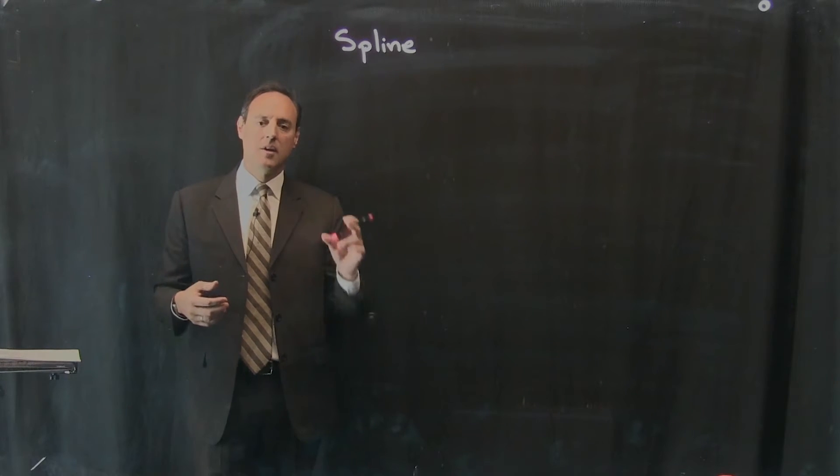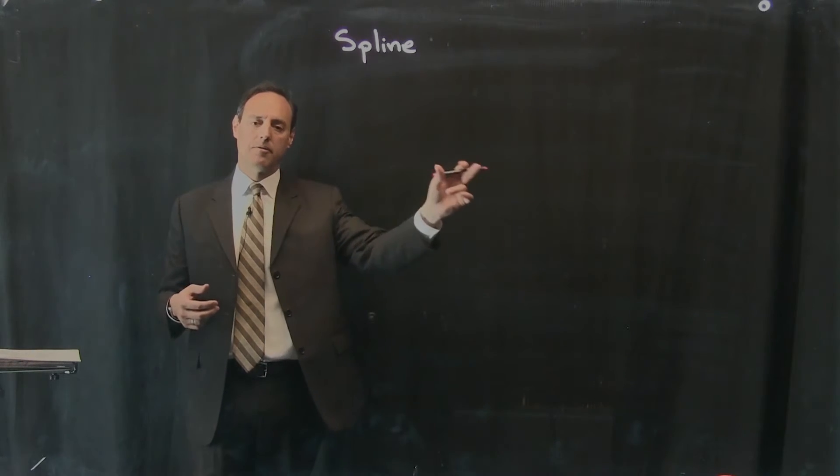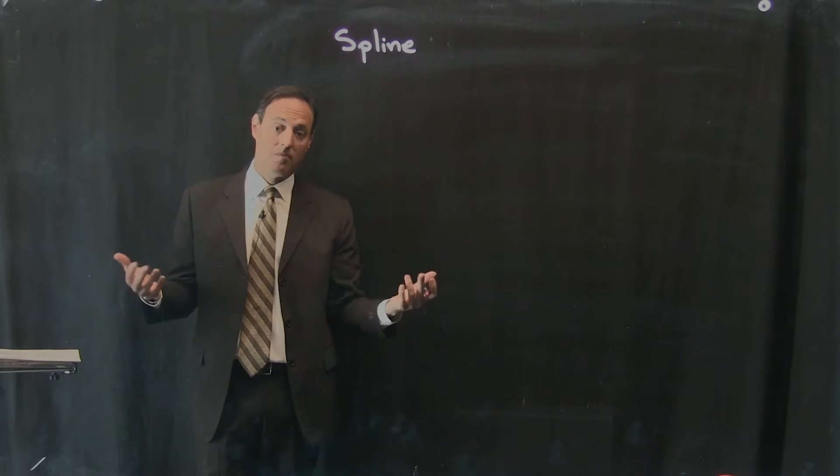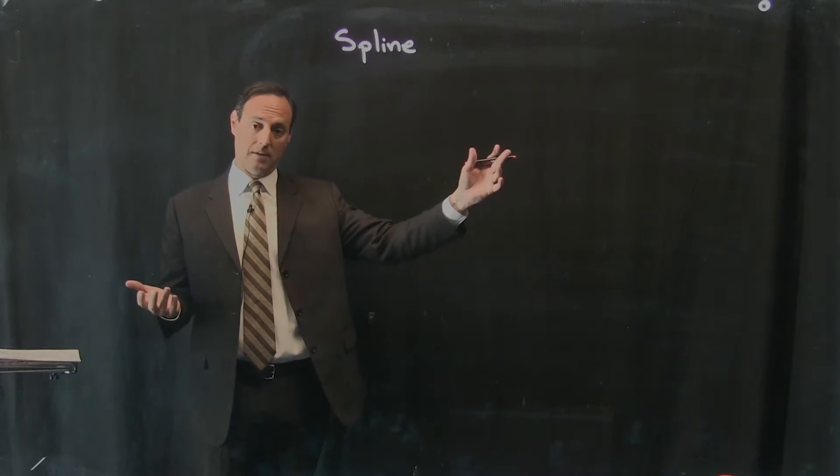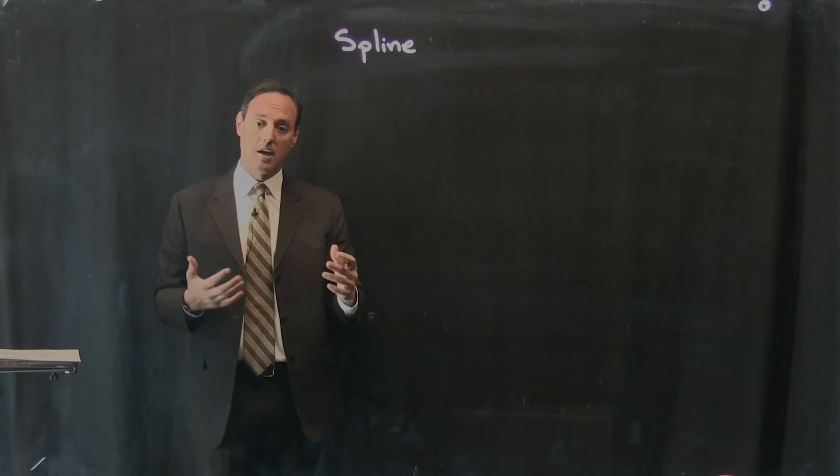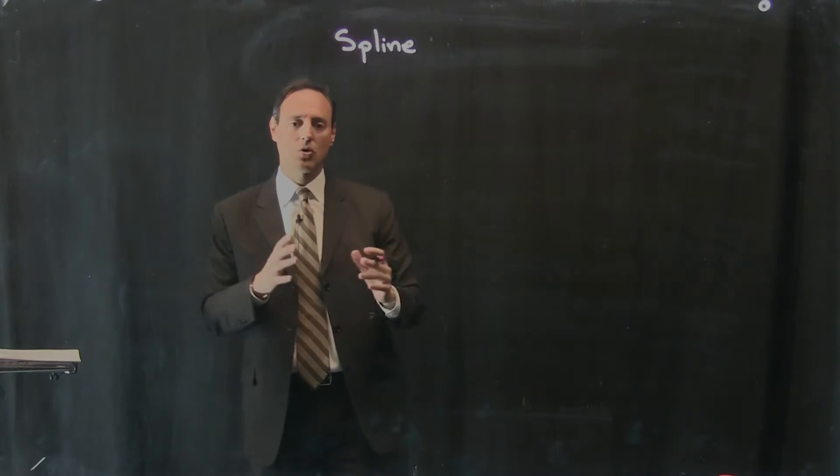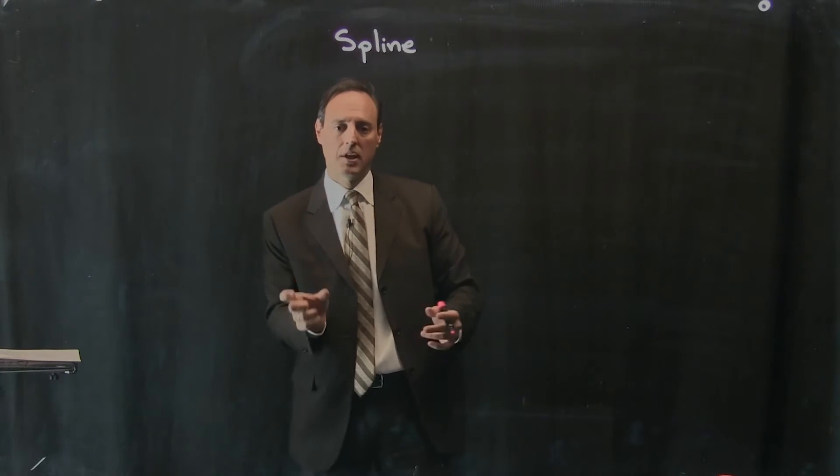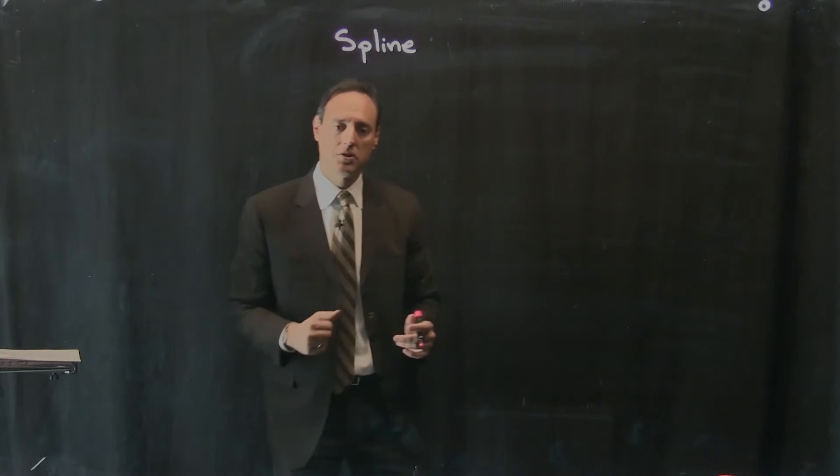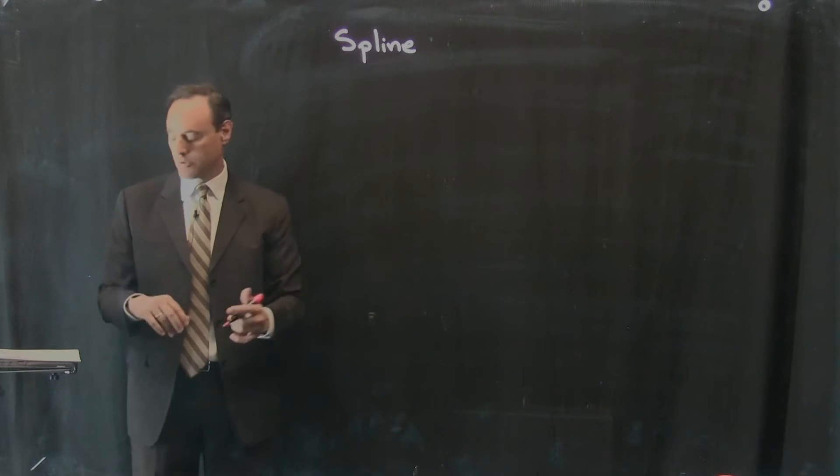The spline pieces together a bunch of cubic polynomials to make this very beautiful fit to your data that's very smooth and nice. But it doesn't try to approximate the entire function over the entire range with one function. It pieces together a bunch of functions in a principled way to give you a very nice result.